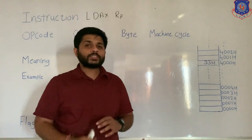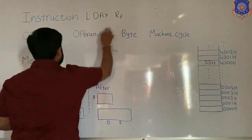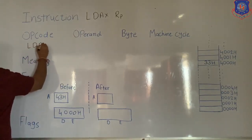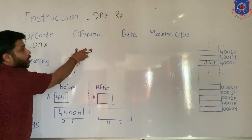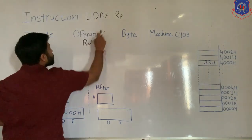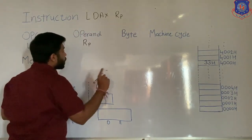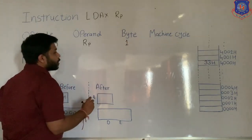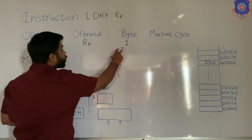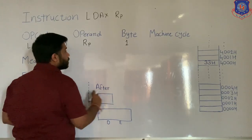Let's see the instruction LDAX register pattern. In this instruction, the first part is known as opcode, so the opcode is LDAX. The remaining part of the instruction is the operand, which is the register pattern. In this instruction, no data is present, which means the instruction is of one byte. A one-byte instruction means when stored in memory, it will occupy only one memory location.